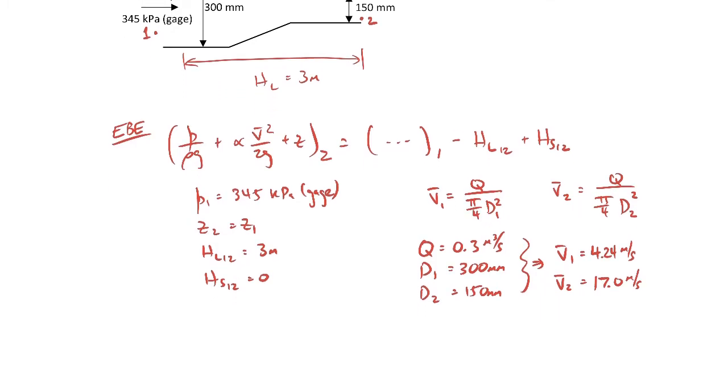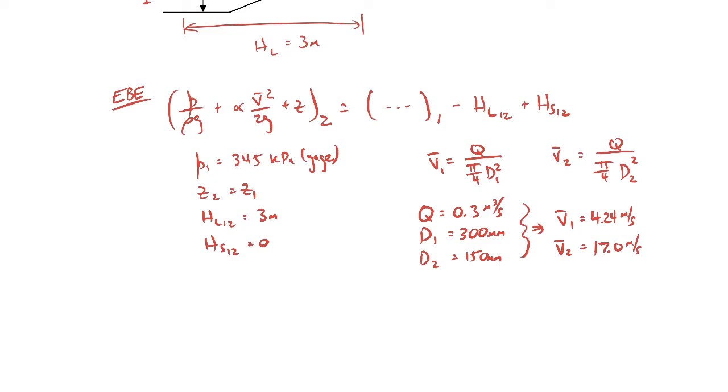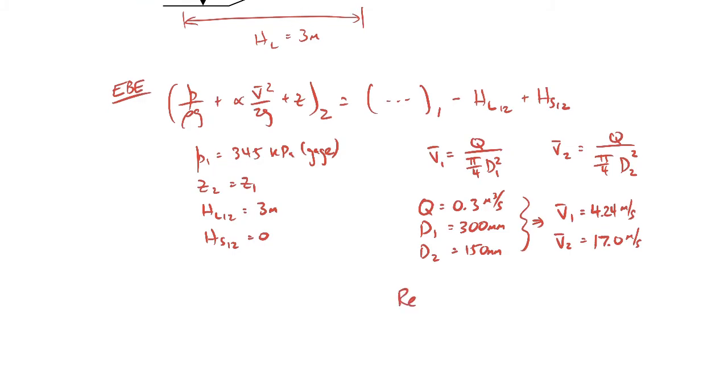Now to find the kinetic energy correction factors, the alphas, let's first find the Reynolds number for the flow just to see whether we're dealing with laminar or turbulent pipe flow. The Reynolds number is average velocity times the pipe diameter divided by the kinematic viscosity. In this case we're dealing with water. The kinematic viscosity of water is about 1.8 times 10 to the minus 6 square meters per second. The Reynolds number at 1 comes out to be 7.07 times 10 to the 5th. The Reynolds number at 2 is 1.41 times 10 to the 6th, so they're clearly much larger than the transition Reynolds number of about 2300, so we can say that the flow is turbulent at both locations.